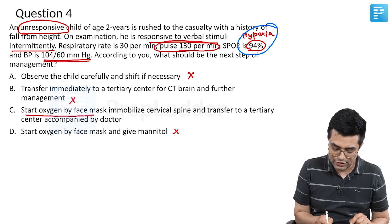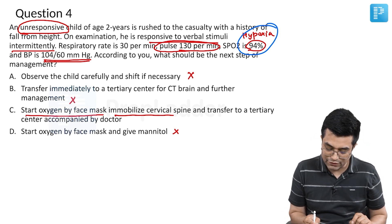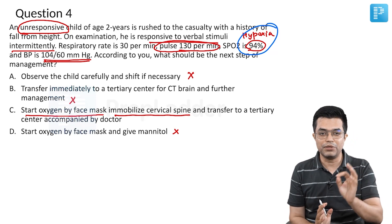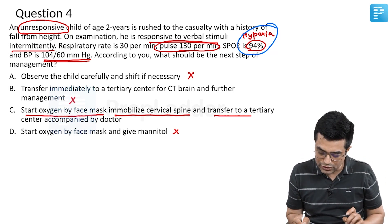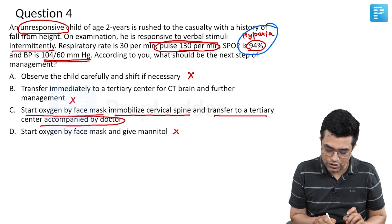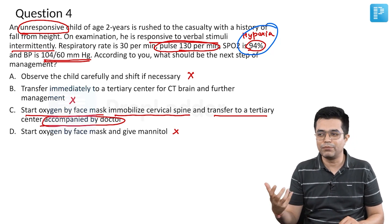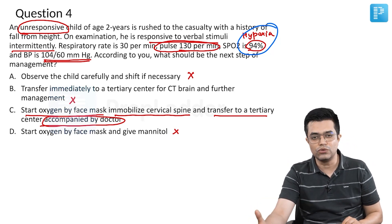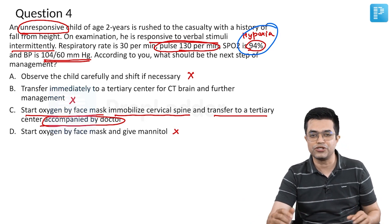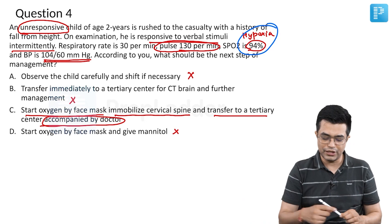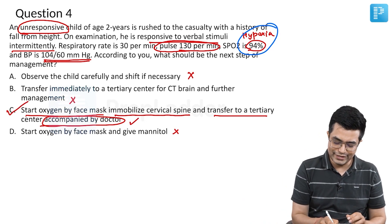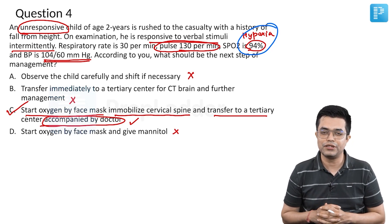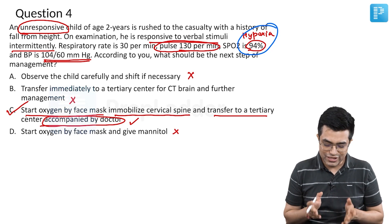That leaves Option C: start oxygen by face mask, which is appropriate; immobilize the cervical spine — extremely important in any trauma patient, mandatory alongside airway, breathing, and circulation; and transfer to a tertiary center accompanied by a doctor. With a doctor present, the patient can receive intubation or basic life resuscitation measures like CPR en route if needed. The most appropriate answer is C.